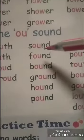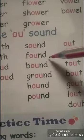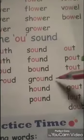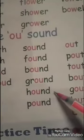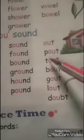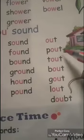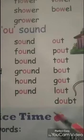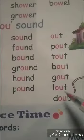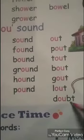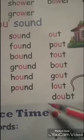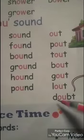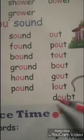Then S-O-U-N-D, Sound. F-O-U-N-D, Found. B-O-U-N-D, Bound. G-R-O-U-N-D, Ground. H-O-U-N-D, Hound. P-O-U-N-D, Pound. O-U-T, Out. P-O-U-T, Pout. T-O-U-T, Tout. B-O-U-T, Bout. G-O-U-T, Gout. L-O-U-T, Lout. D-O-U-B-T, Doubt — in this word, B is totally silent, D-O-U-B-T, but it sounds as 'doubt'.